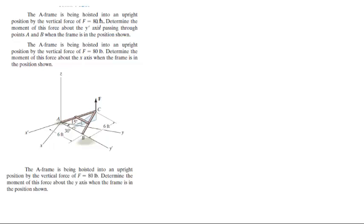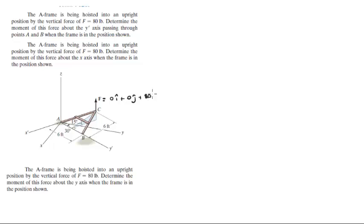Alright guys, now we're going to do these three problems where we have this frame and it's being hoisted into an upright position, so that means the force is going straight up. So the Cartesian vector form of the force is 0 on the i plus 0 on the j plus 80 in the k.